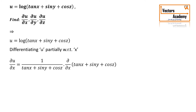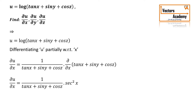When taking the derivative of these terms, remember y and z are constant terms, so the derivative of constant terms is 0, and the derivative of tan x is sec squared x. So the answer for the partial derivative of u with respect to x is sec squared x upon (tan x + sin y + cos z).